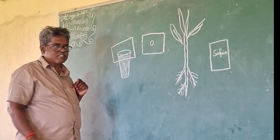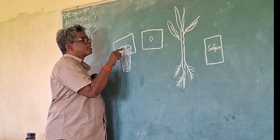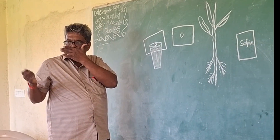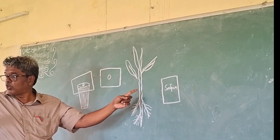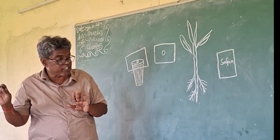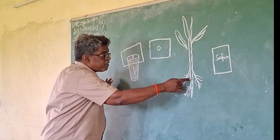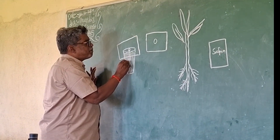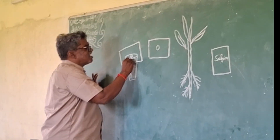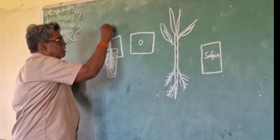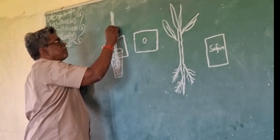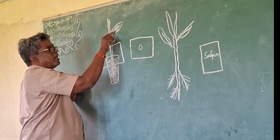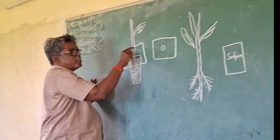Now keep the cardboard sheet on the glass so that the hole comes at the center of the glass. Take the balsam plant — collect a fresh plant, not one collected the night before — and keep the roots totally dipped into the saffron-colored water. Before keeping it, observe the color of the veinlets and stem color of this balsam plant.